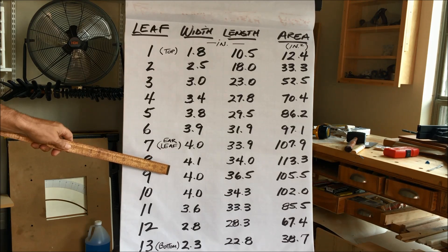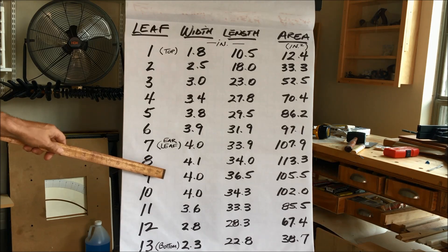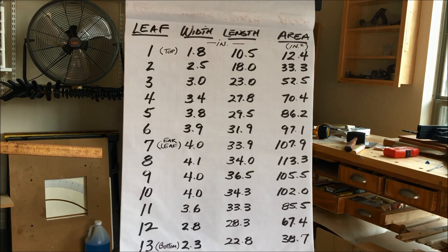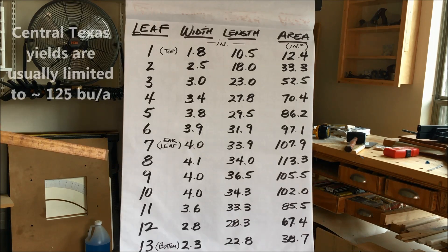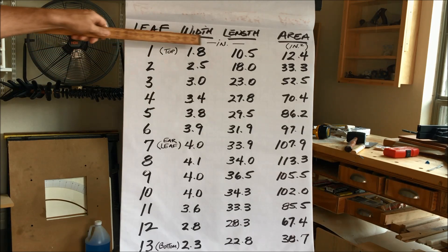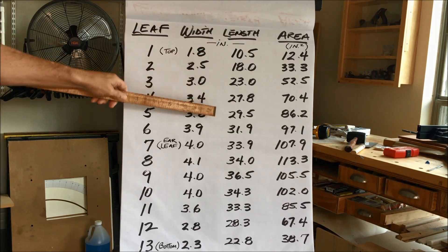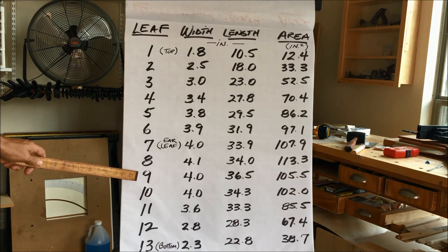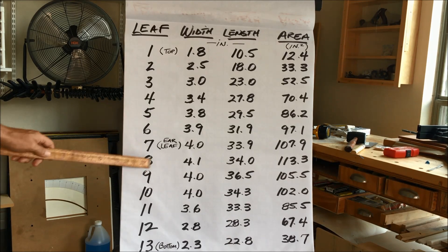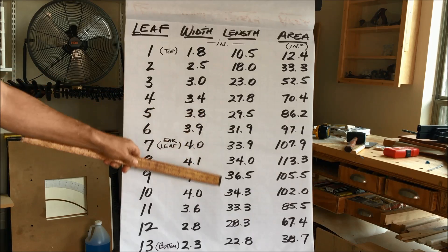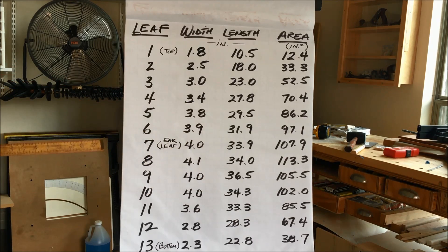We actually harvested this plot last week and it came in at 180 to 194 bushels per acre — pretty remarkable. This is your width, and here's your length in inches. The smaller leaves are at the top, not as wide, but as we move down into the canopy, look at the length. We're actually getting just a shade over three feet in length on leaf number nine, just a couple of leaves below the ear leaf. So approximately 33 inches in length in the heart of the canopy — quite long and really remarkable.